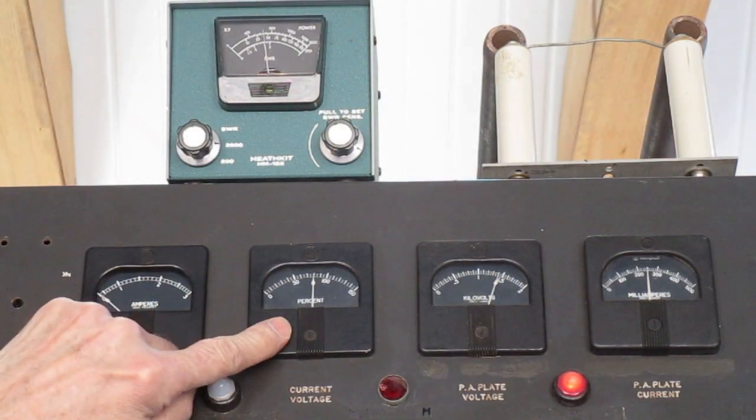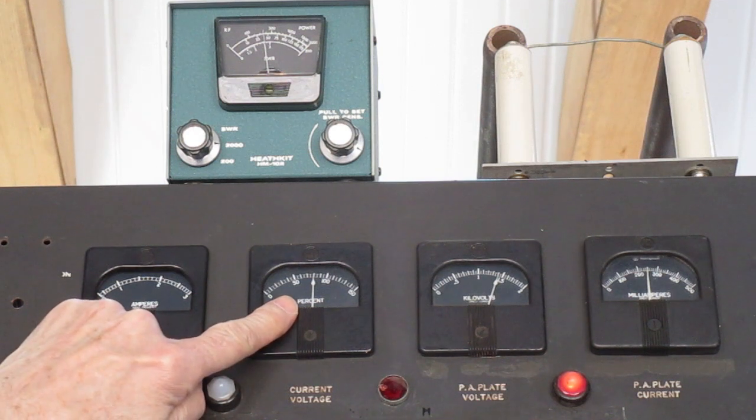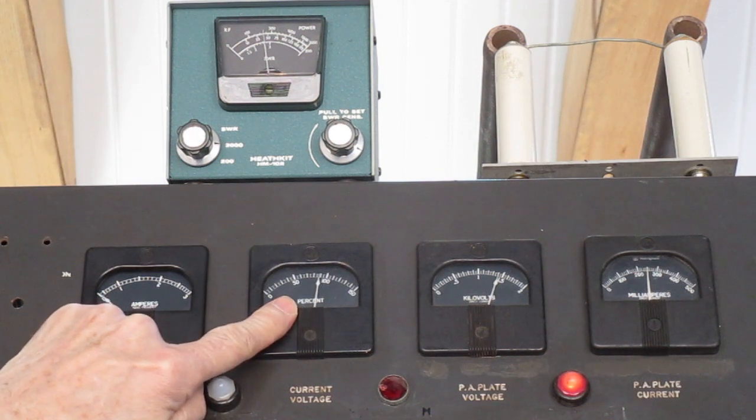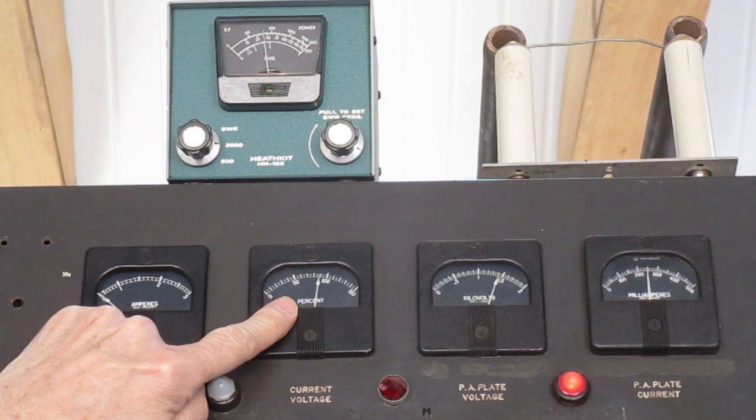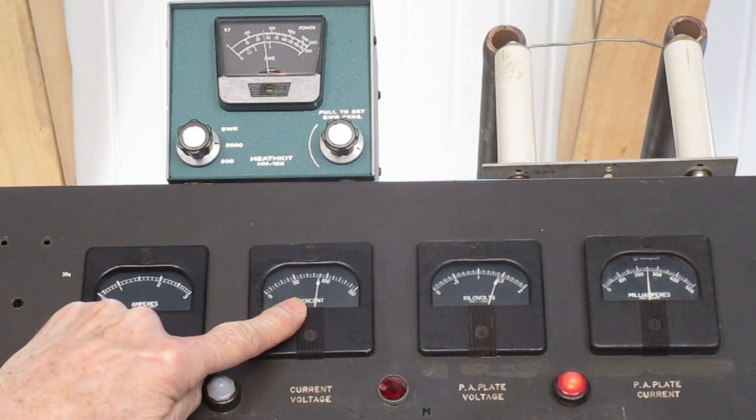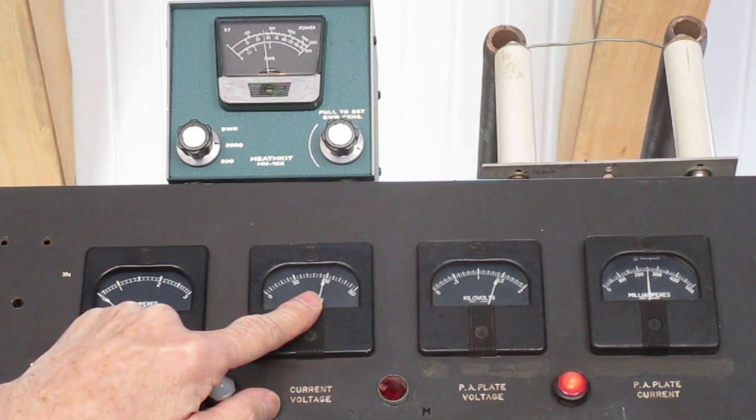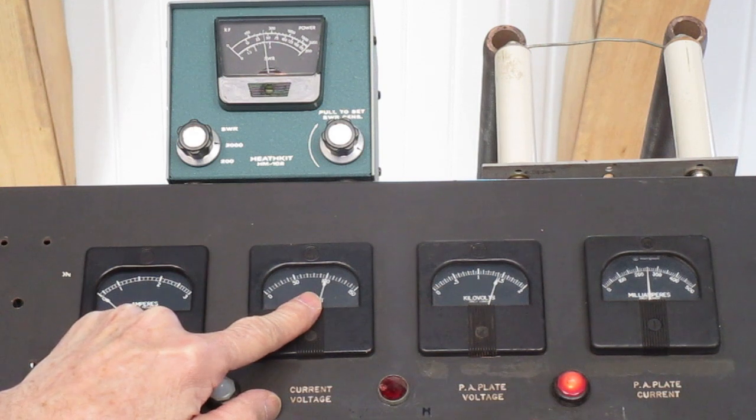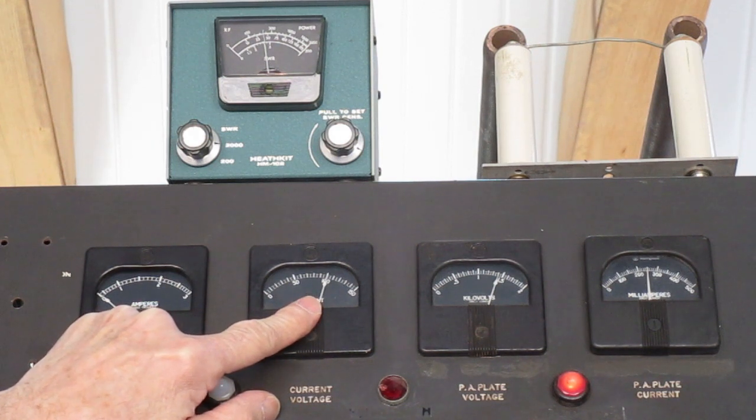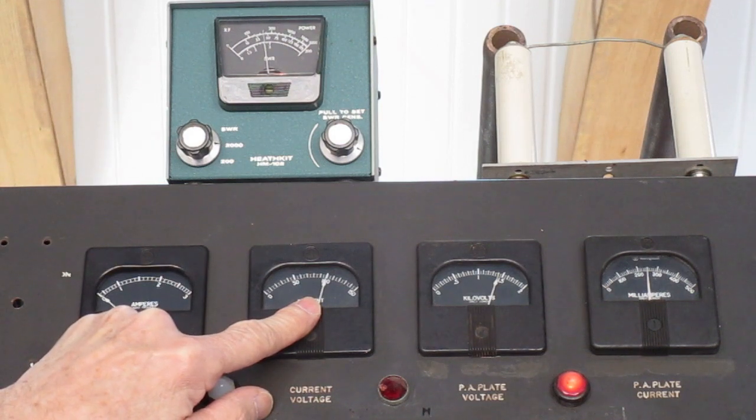Looking at some other parameters, we see that the oscillator cathode current is at 80%, which is okay. Buffer grid current is good at about 90%. Buffer cathode current, though, a little bit low, but reasonable. The PA grid current is very good. The PA cathode current for the first tube is good. And the PA cathode current for the second tube also looks to be very good.